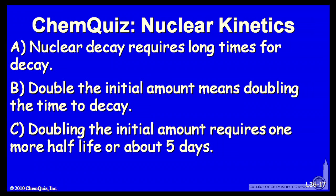Let's look at a possible explanation for each answer. A: nuclear decay requires long times for decay. B: double the initial amount means doubling the time to decay. Or C: doubling the initial amount requires one additional half-life, or about five days. Think about those three and make a selection.